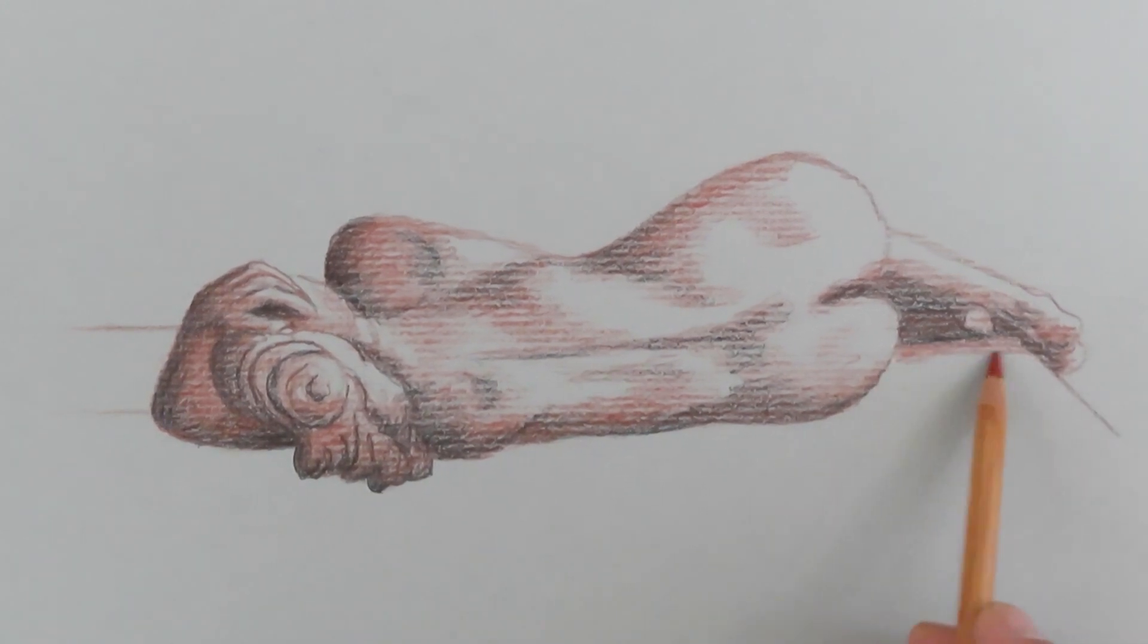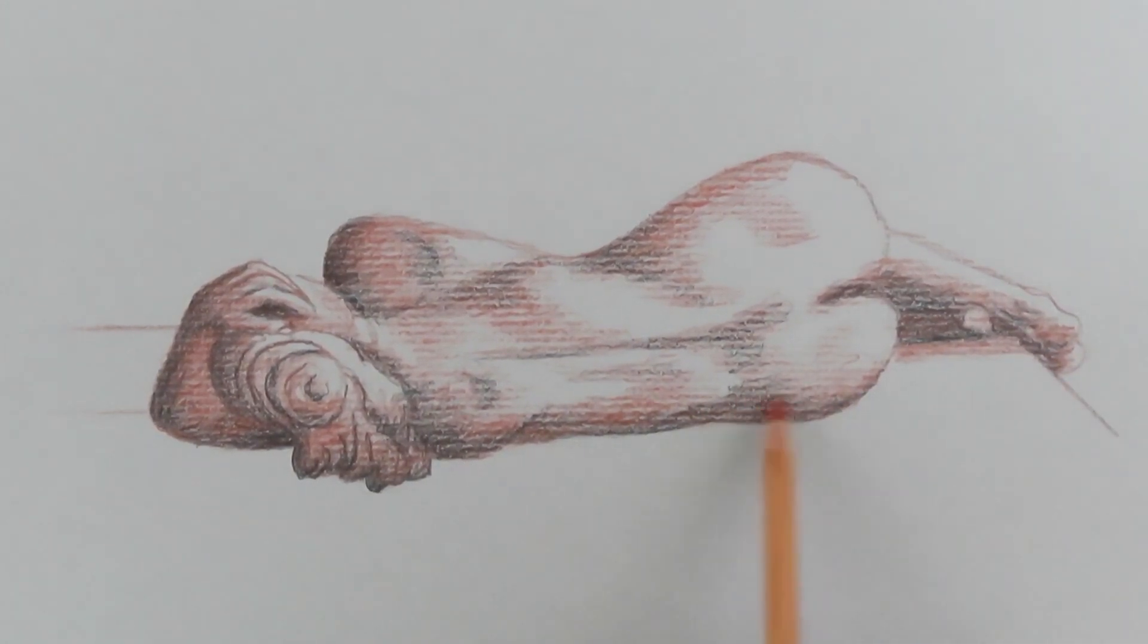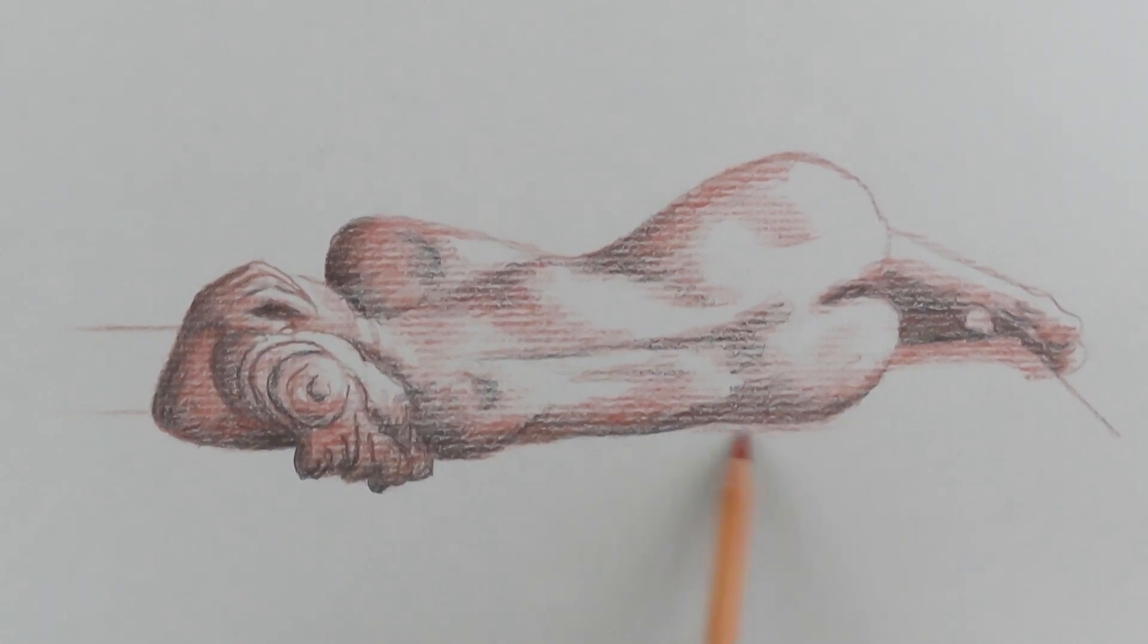And what I do is, because I'm working on this textured paper, I want to actually just go in one direction. So we have our edge of the base here. And then I have just the shadow area coming off.